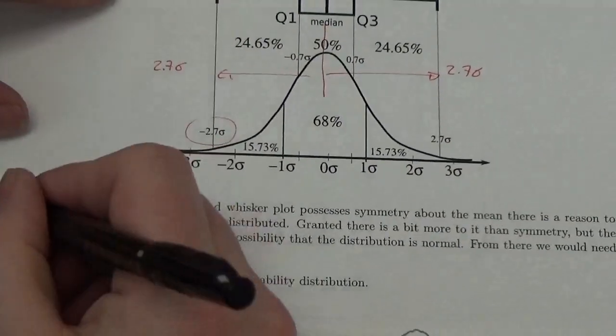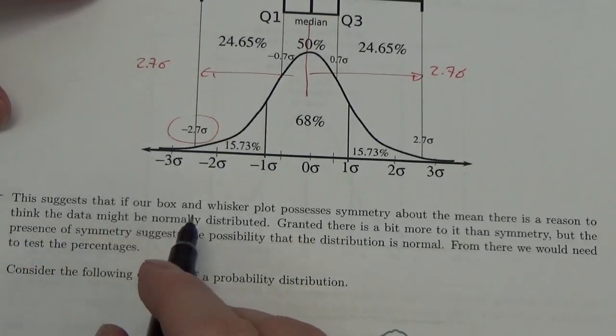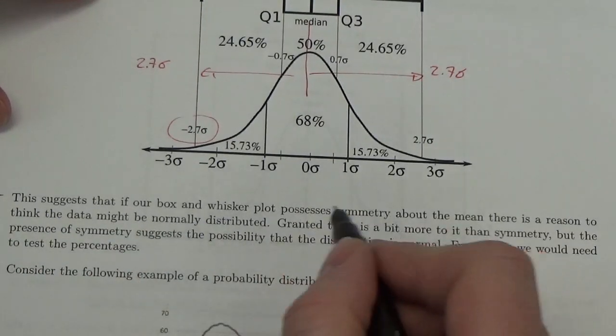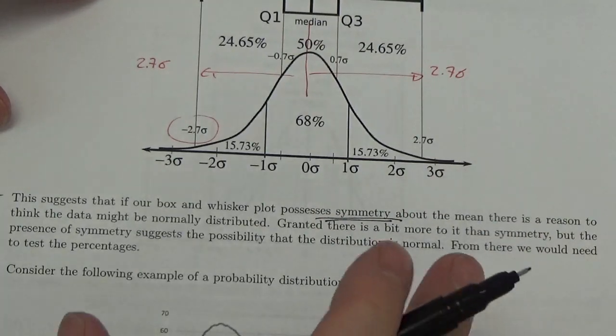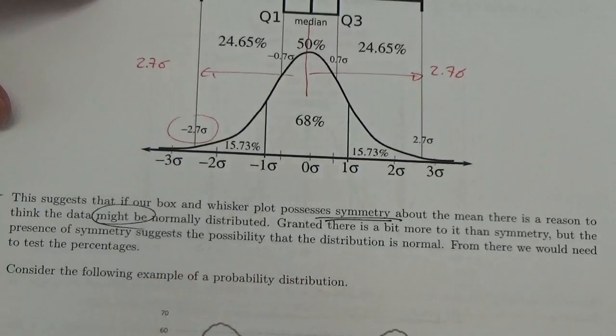Now, this is really the important point that we want to get to. And I'll just read this off for you here. This suggests that if our box and whisker plot possesses symmetry about the mean, that there's good reason to think that the data might be normally distributed.